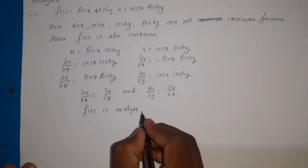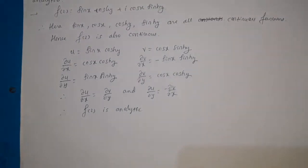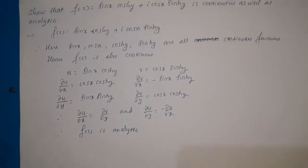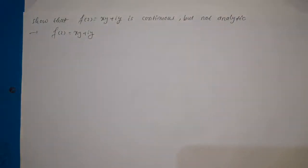So the function f(z) = sin(x)cosh(y) + i·cos(x)sinh(y) is continuous and also analytic. The next example: show that f(z) = xy + iy is continuous but not analytic. We need to prove that f(z) is continuous but not satisfying the CR equations.